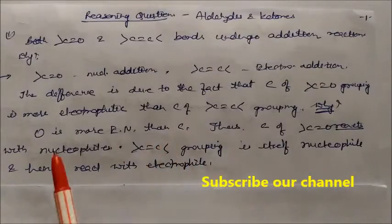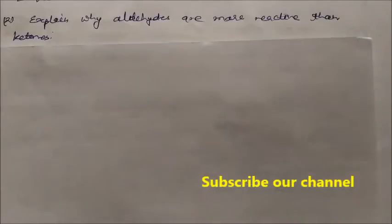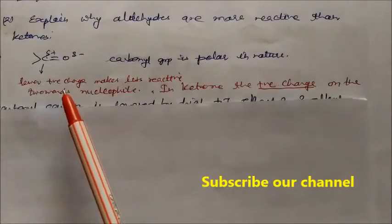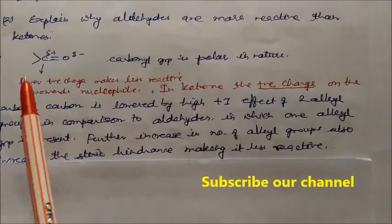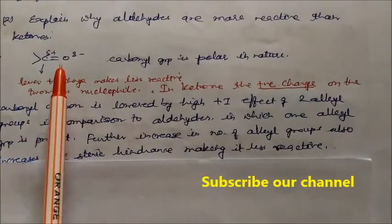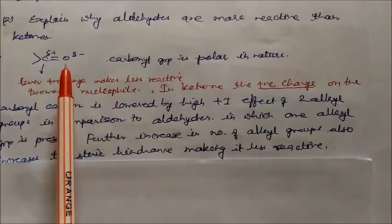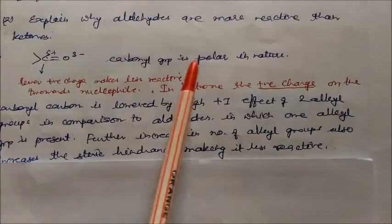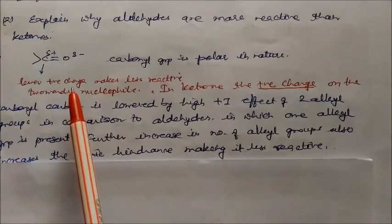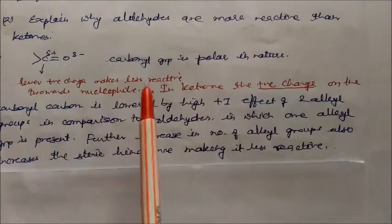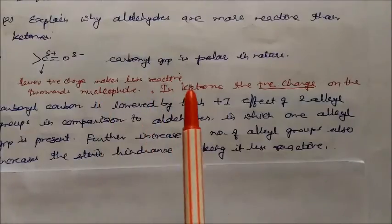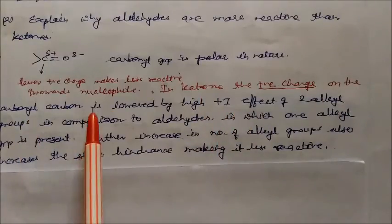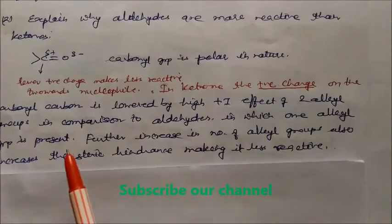Explain why aldehydes are more reactive than ketones. In case of ketones, there is a polarity between the carbon and oxygen. When any reagent is present, the oxygen gets the partial negative charge and carbon gets the partial positive charge, making the carbonyl group polar in nature. Due to the lower positive charge on the carbonyl carbon, it becomes less reactive towards nucleophiles. In ketones, the positive charge on the carbonyl carbon is lowered by the +I effect of the two alkyl groups.